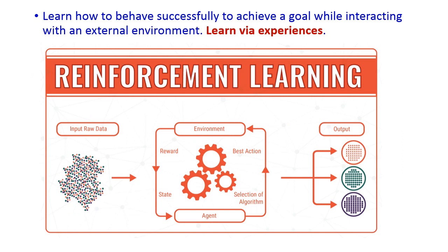Reinforcement learning explains how to behave successfully to achieve the goal. To achieve the goal we need to select the best actions while interacting with the external environment, which is a very complex environment. This reinforcement learning is otherwise called learning via experience. At the first step we cannot reach the goal, so repeatedly we learn from previous experience and then only we can reach the goal.